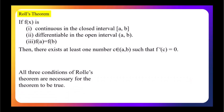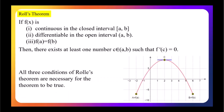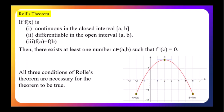All three conditions of Rolle's theorem are necessary for the theorem to be true. In this example, the function meets all three criteria: it is continuous on the interval [-2, 6], differentiable on the open interval (-2, 6), and f(-2) equals f(6). As expected by Rolle's theorem, there exists at least one point — here at x equals 2 — where the tangent line is horizontal, meaning the slope of the tangent line is zero.